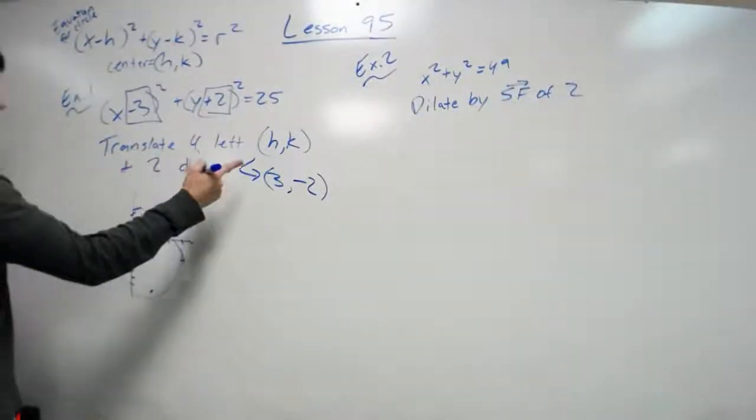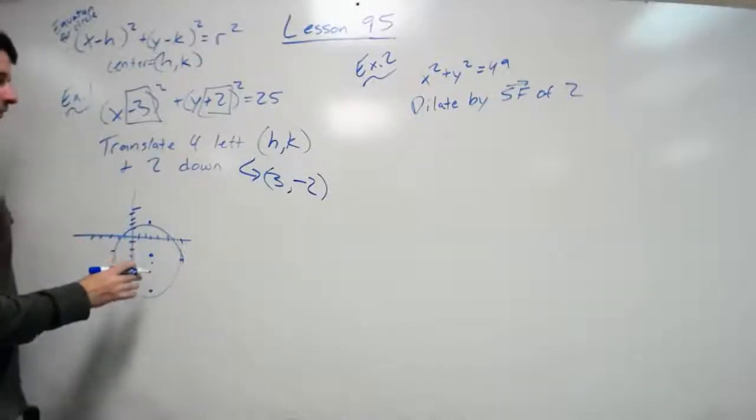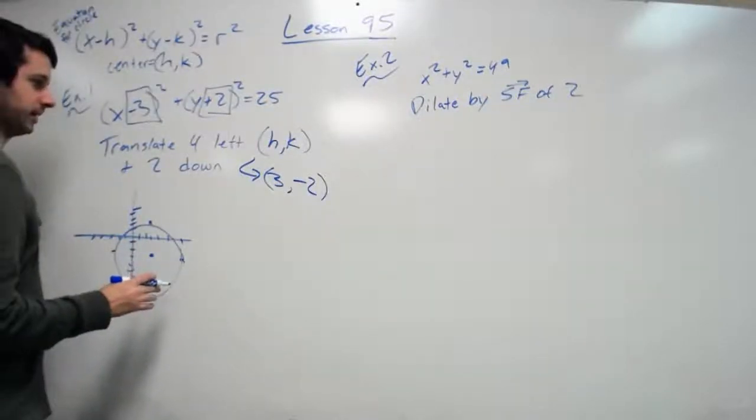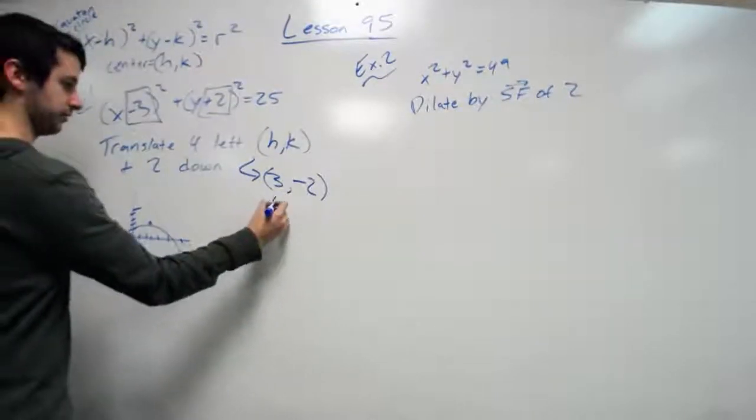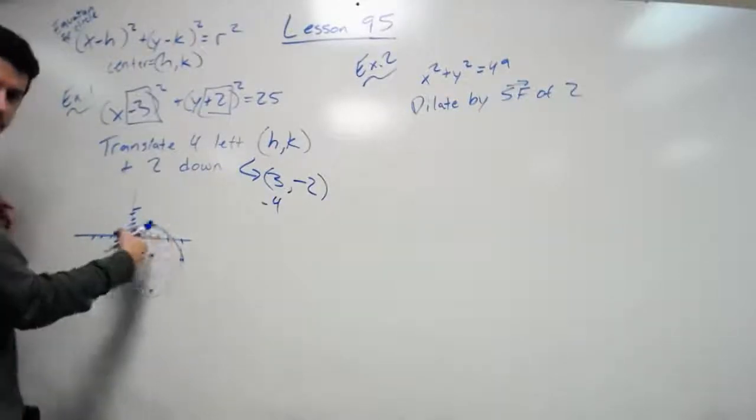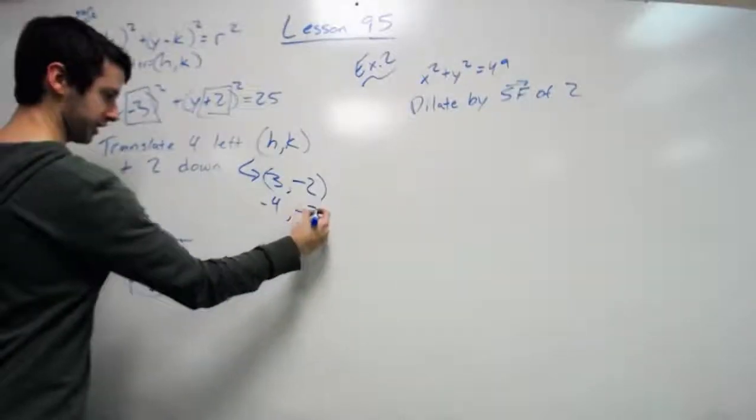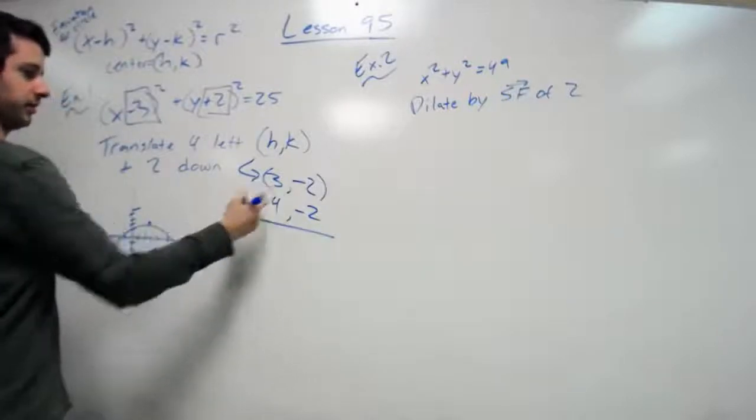It wants us to translate this four left and two down. So literally all you do, if we're going four left and two down, is we're going to move the center. So I'm going to subtract four here, since we're going to the left, that's negative in a coordinate grid. And then I'm going to subtract two here, from three negative two.